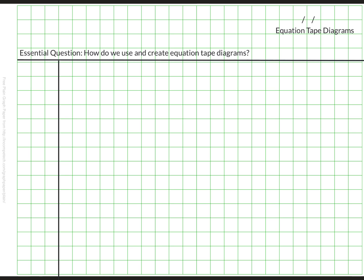We've used tape diagrams before when we worked on ratios. Tape diagrams are just a model that represents some sort of math situation. We're going to use them for equations. Equation tape diagrams specifically help us find missing values.